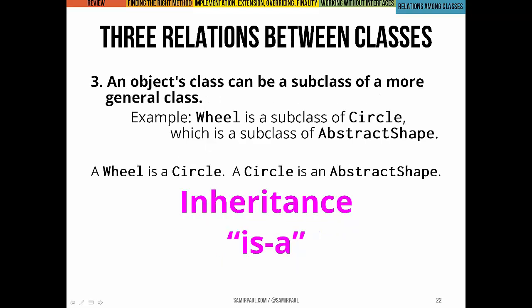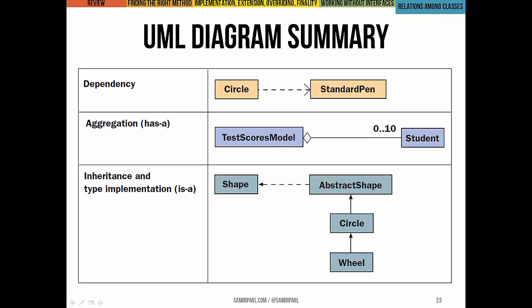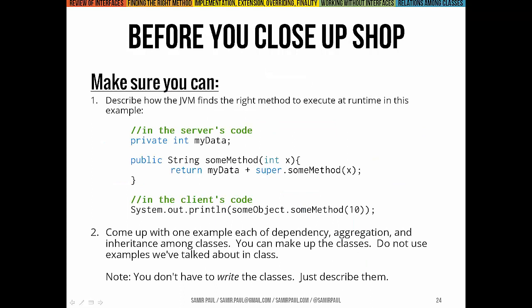Finally, an object's class can be a subclass of some more general class. For example, the Wheel class is a subclass of Circle, and Circle is a subclass of AbstractShape — related by inheritance. This is an is-a relationship: a wheel is a circle, and a circle is an abstract shape. So to summarize, the three relationships are: dependency (using), aggregation (has-a), and inheritance (is-a).